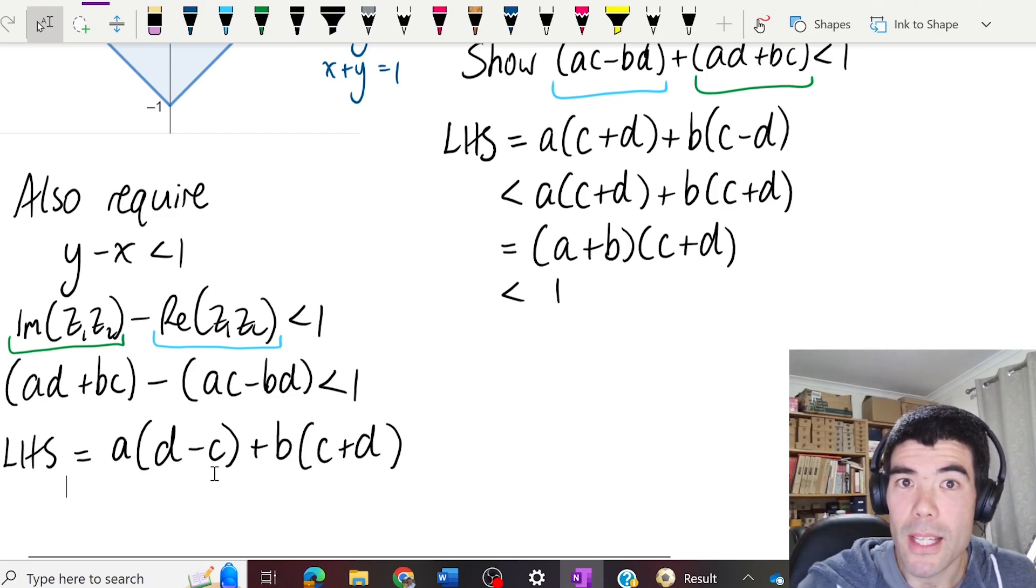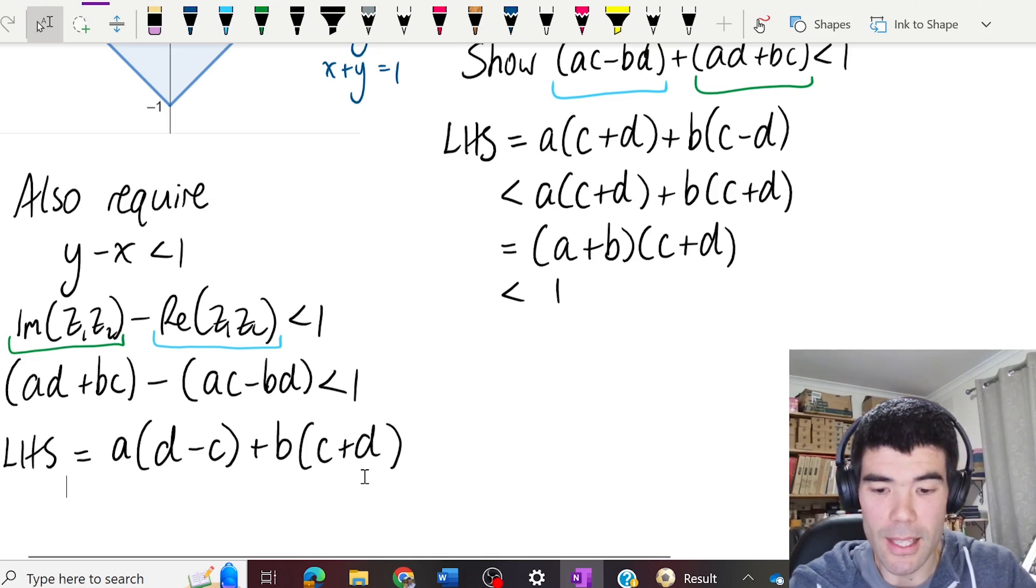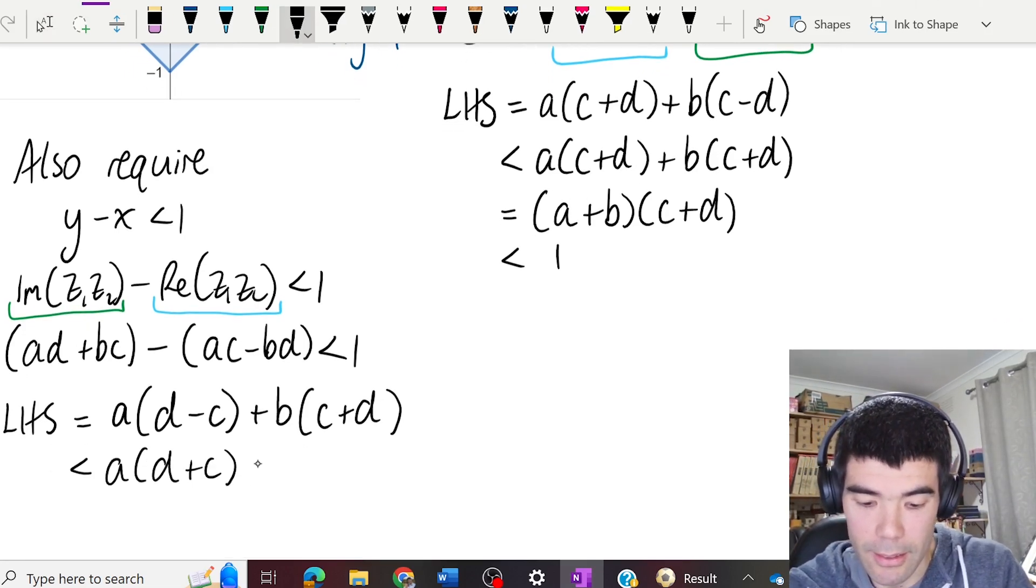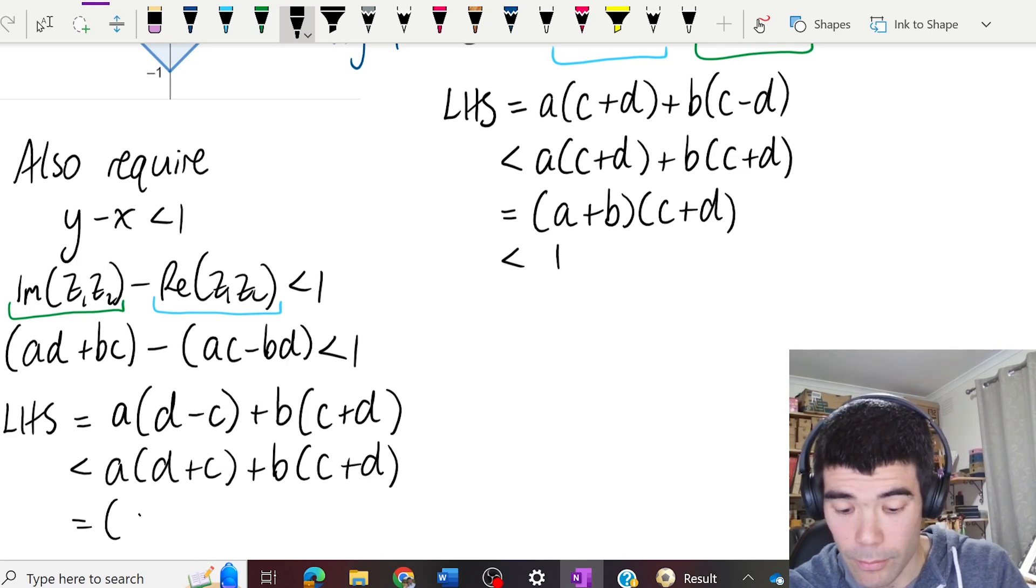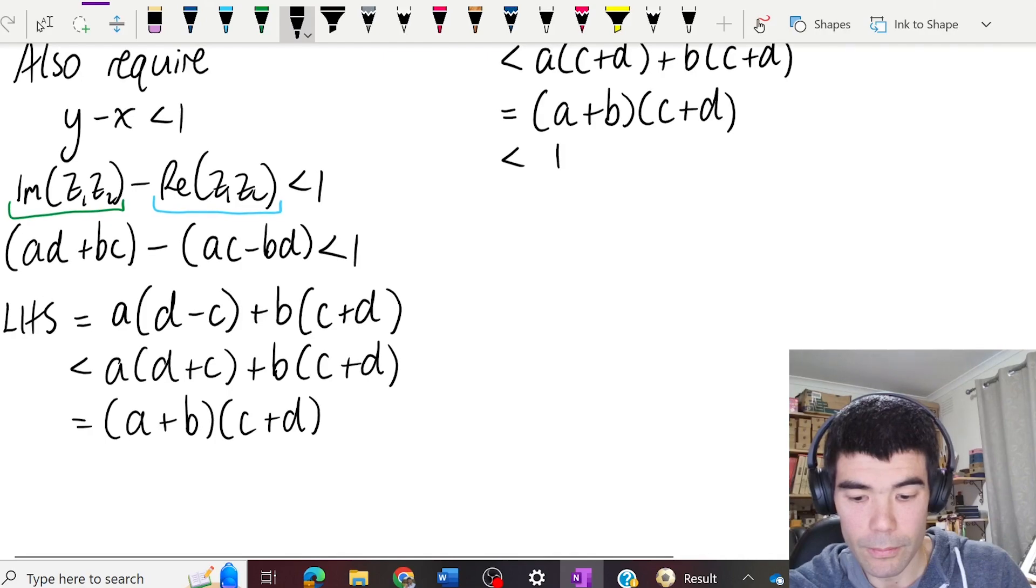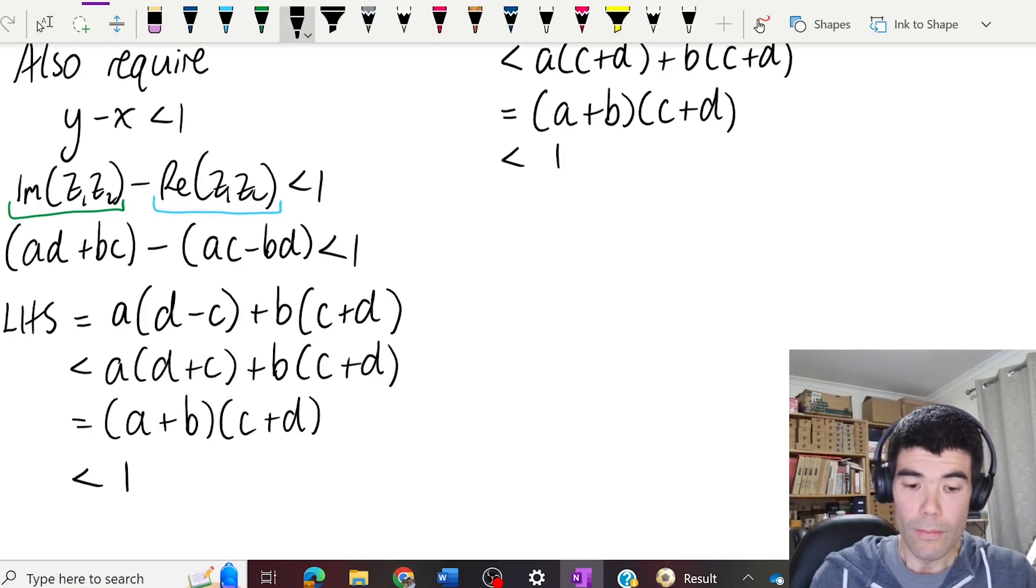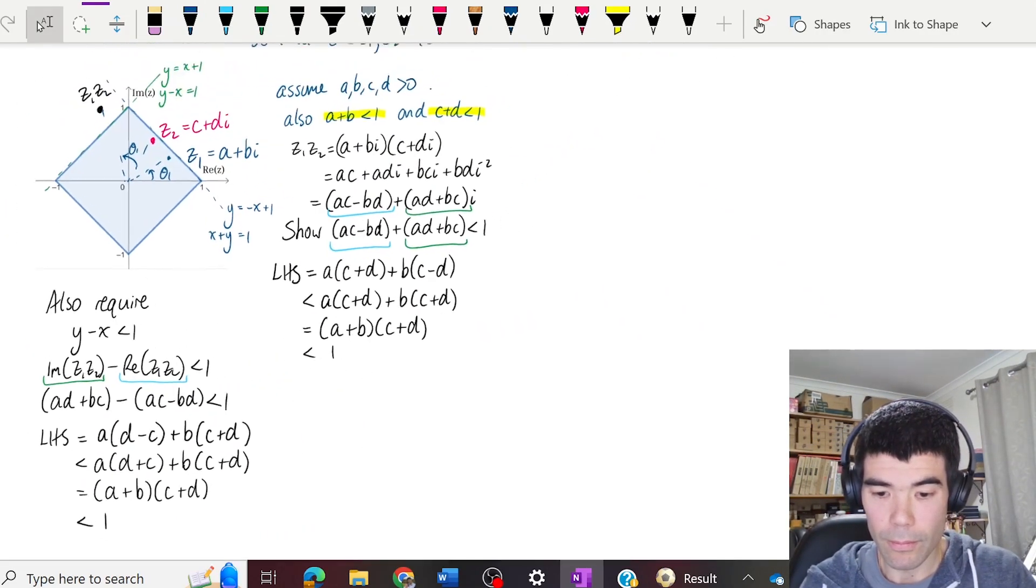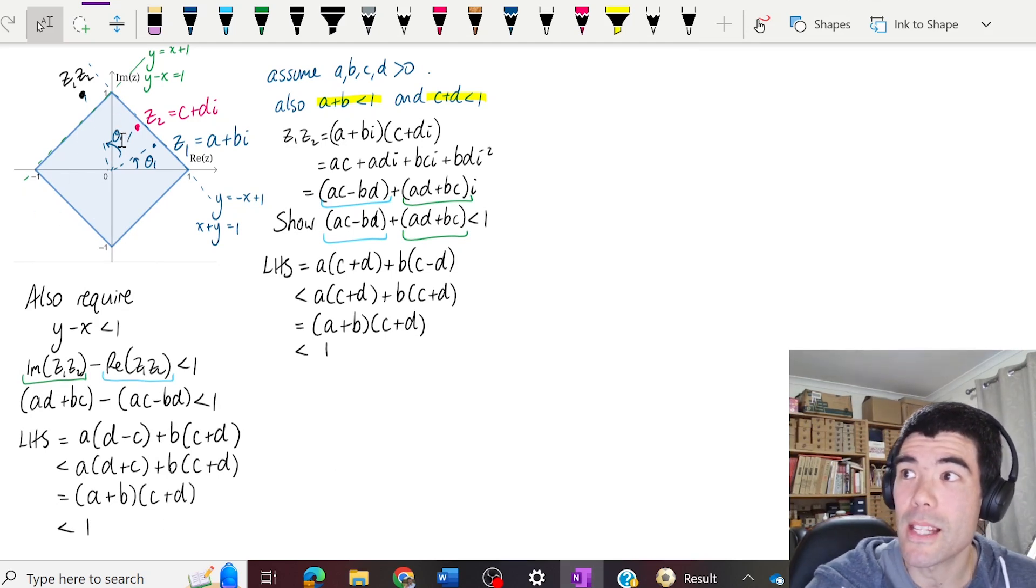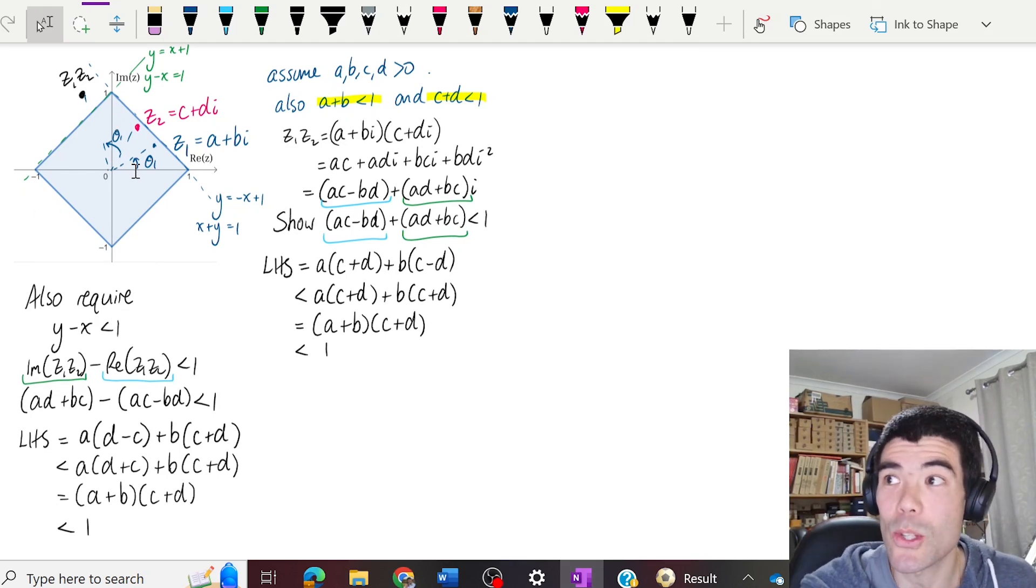Again, we know d minus c is less than c plus d, which is great. That also guarantees that we're less than this line, which means our product is within the square.